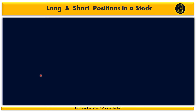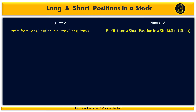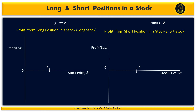First we will see long and short positions in a stock — the underlying asset — with the help of two figures. Figure A shows the profit from a long position in a stock, and Figure B shows the profit from a short position in a stock. Long means buy. We buy something when we are bullish — that the price in the future will go up. So in long stock, we expect the stock price will move up after our buying, and as a result the shape of the long stock line will be upward sloping.